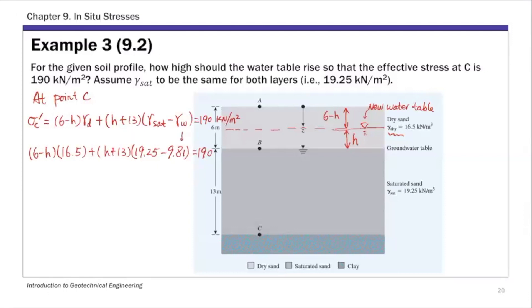There's only one unknown in this last expression, that's the height H. Solve for H. Just one unknown. So from this last expression, H is 4.49, so water has to rise 4.49 meters above the original water table for sigma C prime to be 190.